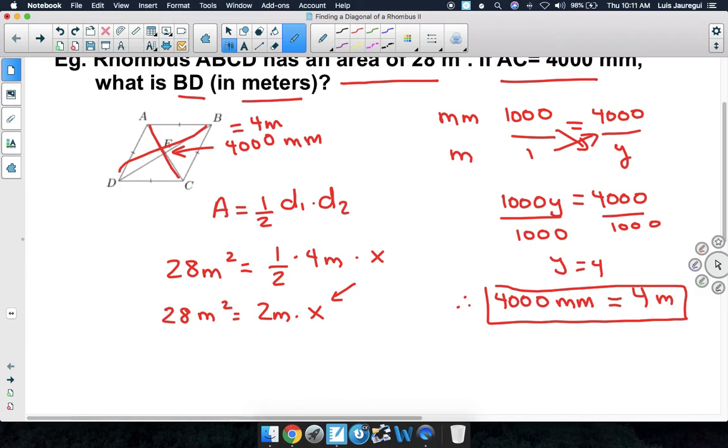Remember, our ultimate goal is to get the X by itself, so we're going to divide by 2M on both sides of the equation here. Okay, 28 divided by 2 happens to become 14, and meter squared divided by meter is simply meters.